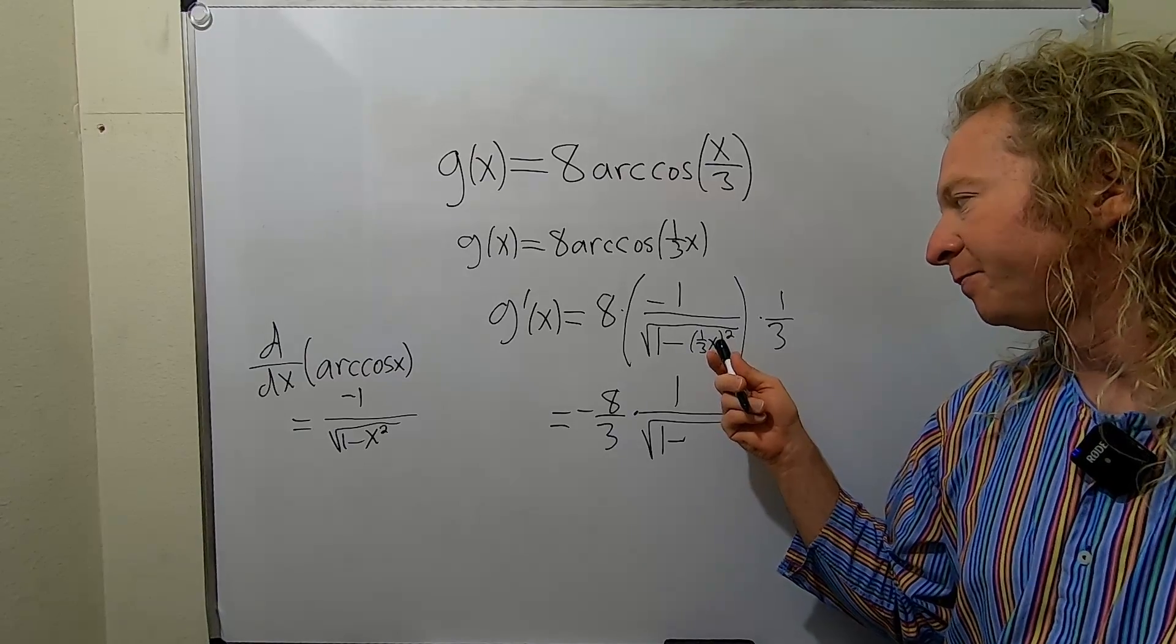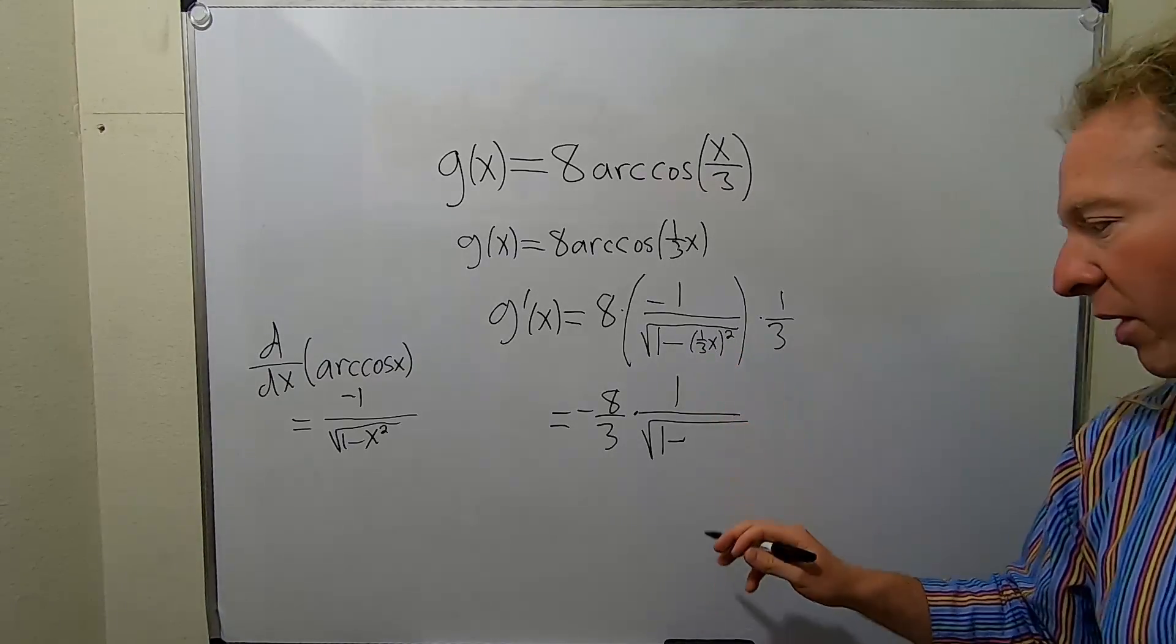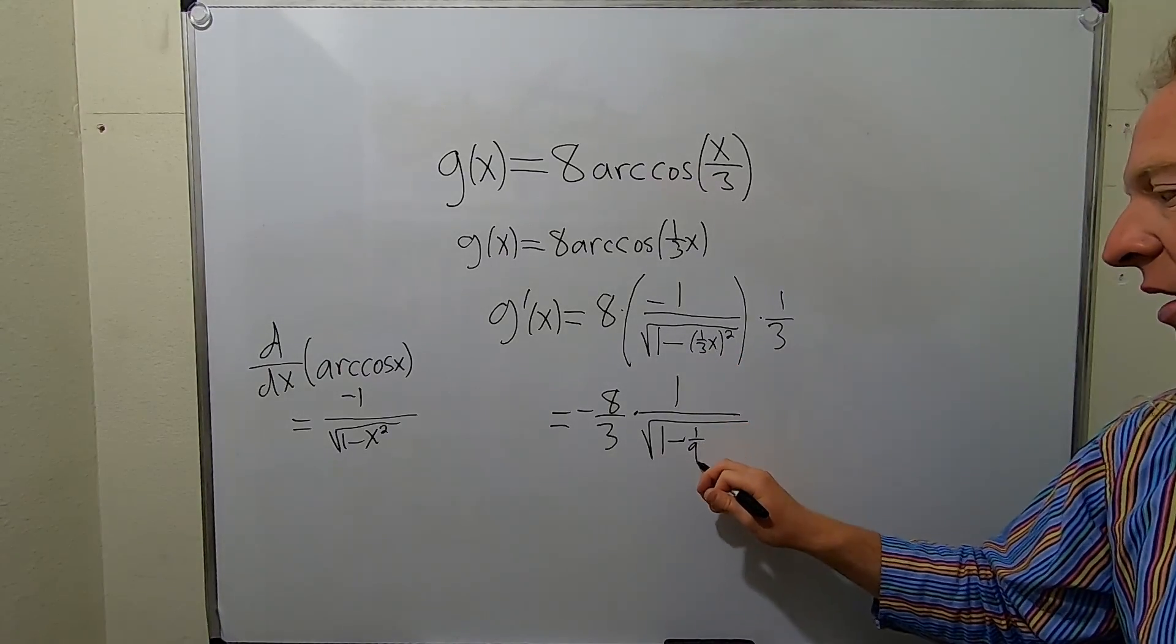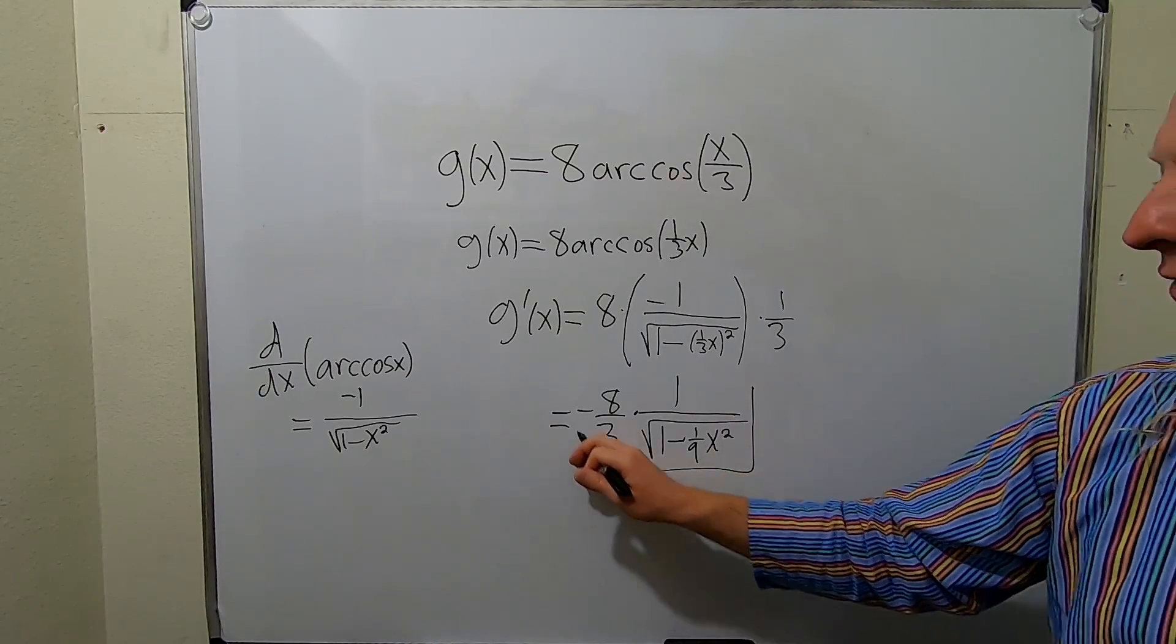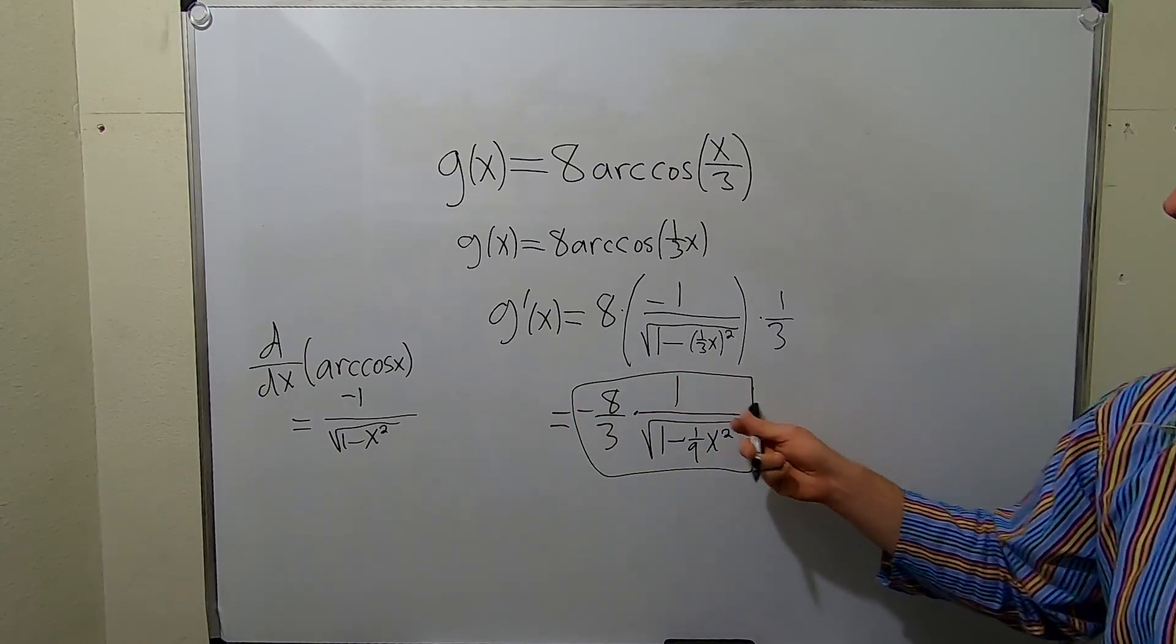If we square the 1 third, we get 1 ninth. So I'll write it like that. Square the x, you get x squared. And that would be the final answer. This would be the derivative of little g.